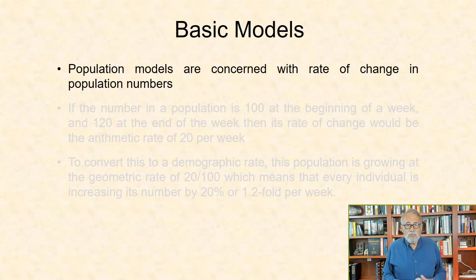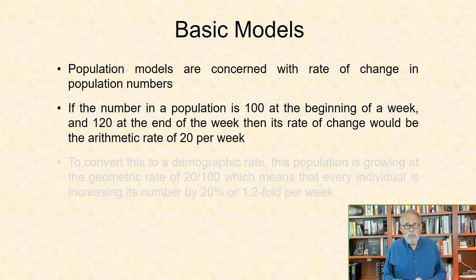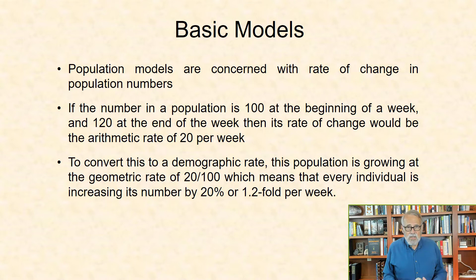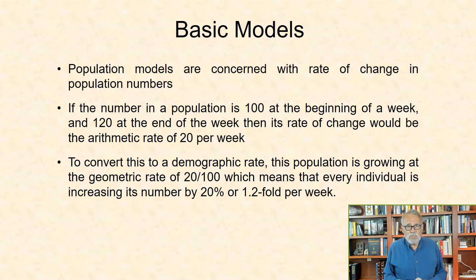Population models are concerned with rate of change in population numbers. If the number in a population is 100 at the beginning of a week and 120 at the end of the week, then its rate of change would be the arithmetic rate of 20 per week. To convert this to a demographic rate, this population is growing at the geometric rate of 20 per 100, which means that every individual is increasing its number by 20%, or 1.2-fold per week.